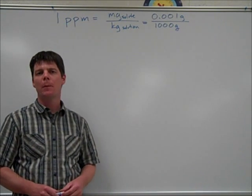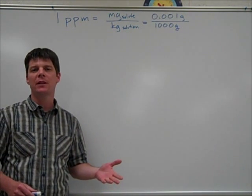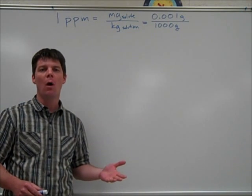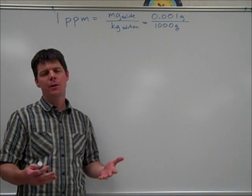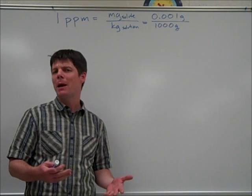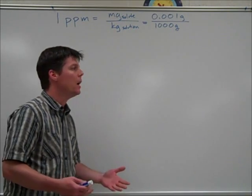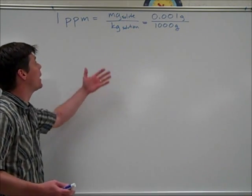This question is asking us to determine how many atoms of barium are present in a 100-milliliter sample of water. In order to do this, we really need to understand what is meant by the term parts per million. So here are some ways of thinking about it.